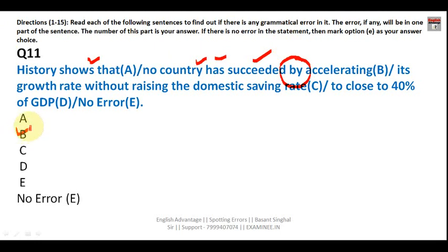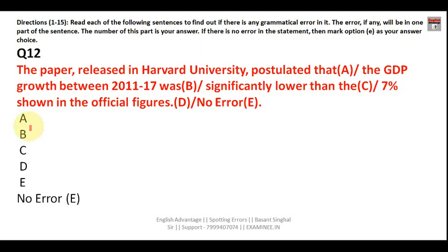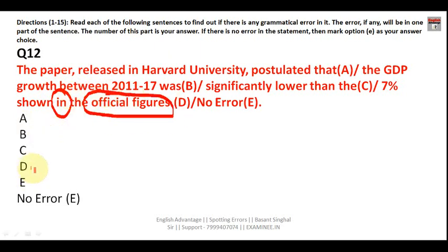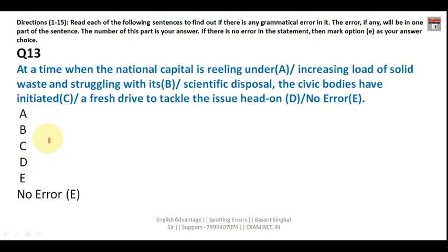Question twelve: 'This paper released at Harvard University postulated that the GDP growth between 2011 and 2017 was significantly lower than the seven percent shown in the official figures.' The growth rate is indicated by the official figures, not shown in them, so it should be 'shown by the official figures' not 'shown in the official figures.' The answer is Part D.